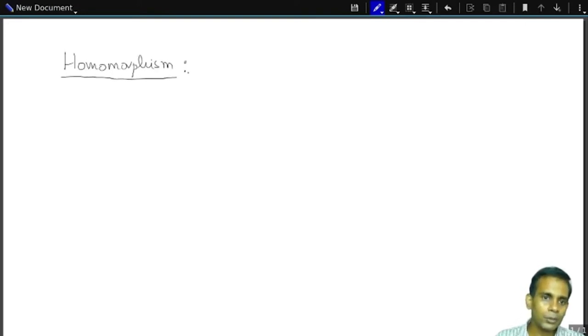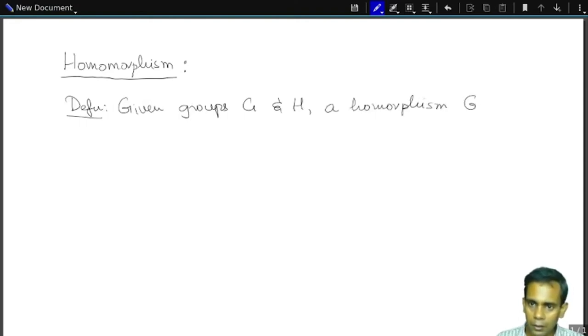It is a slightly more general notion. Given two groups G and H, a homomorphism from G to H is a function F from G to H, which basically takes the group structure of G and transfers it to the group structure of H.